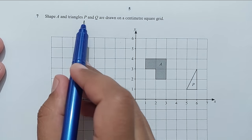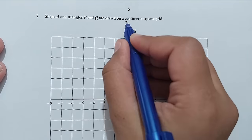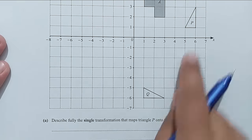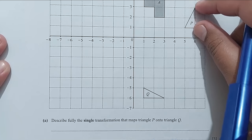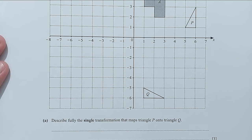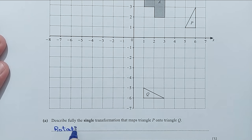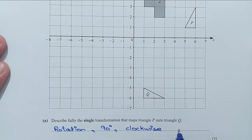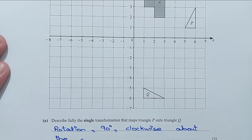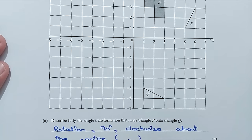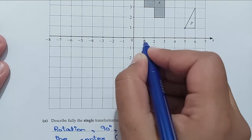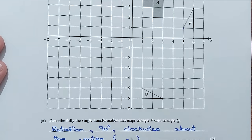Question number 7: Shape A and triangles P and Q are drawn on a centimetre square grid. Part A: describe fully the single transformation that maps triangle P onto triangle Q. This is a rotation of 90 degrees clockwise. Finding the centre of rotation by checking the coordinates — the points map from (5,1) to (-5,1) and (6,3) to (-6,3) — so the rotation is about the origin (0,0).